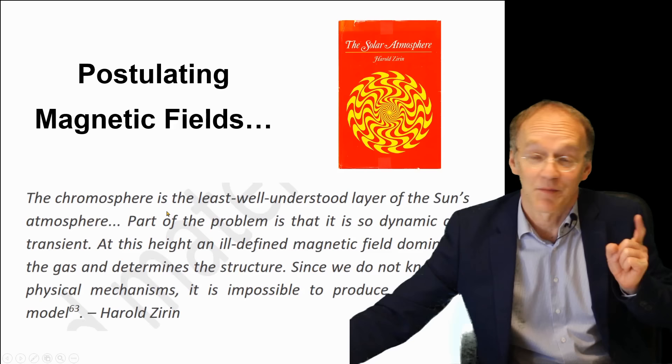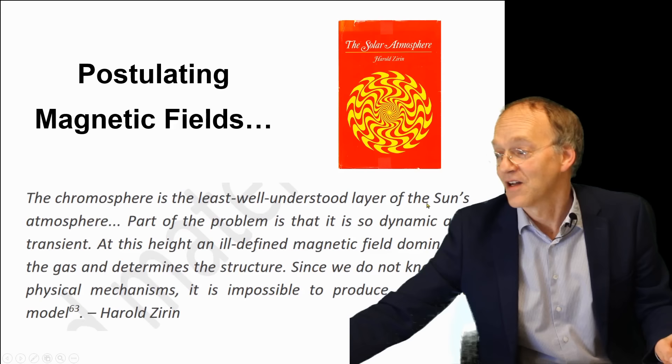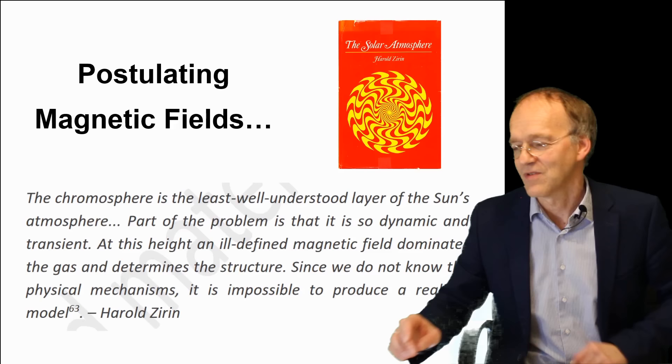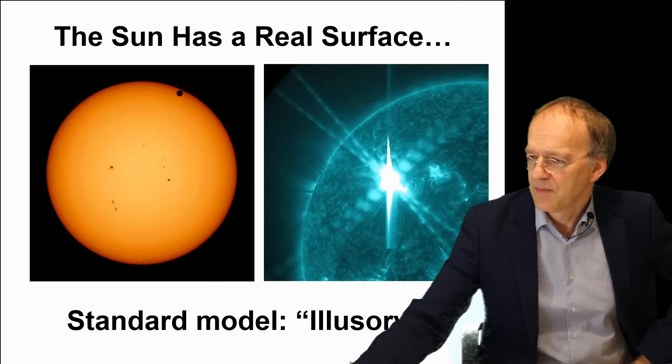He is complaining here that these magnetic reconnections and these magnetic fields have become a wild card for explaining everything, and he said no, it's not even possible to make a quantitative model. I think a little ironic is this: the chromosphere, something we can observe very well, is the least well-understood layer of the Sun's model. The thing you can look best at is the worst understood. I think that indicates already a problem of the model.